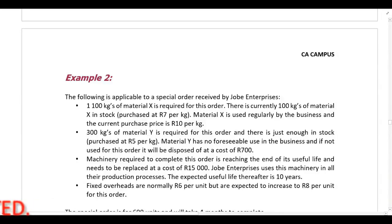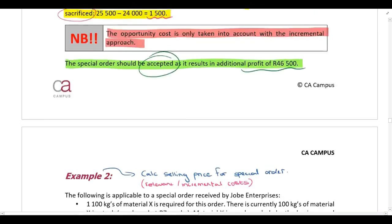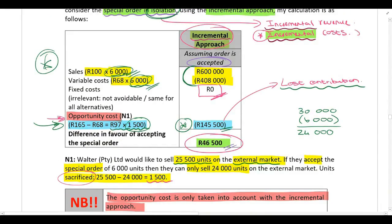In Example 2, I am not going to give you the selling price — I am going to expect you to calculate the selling price for the special order. But we are still going to follow exactly the same logic as Example 1: we only take relevant or incremental costs into account.